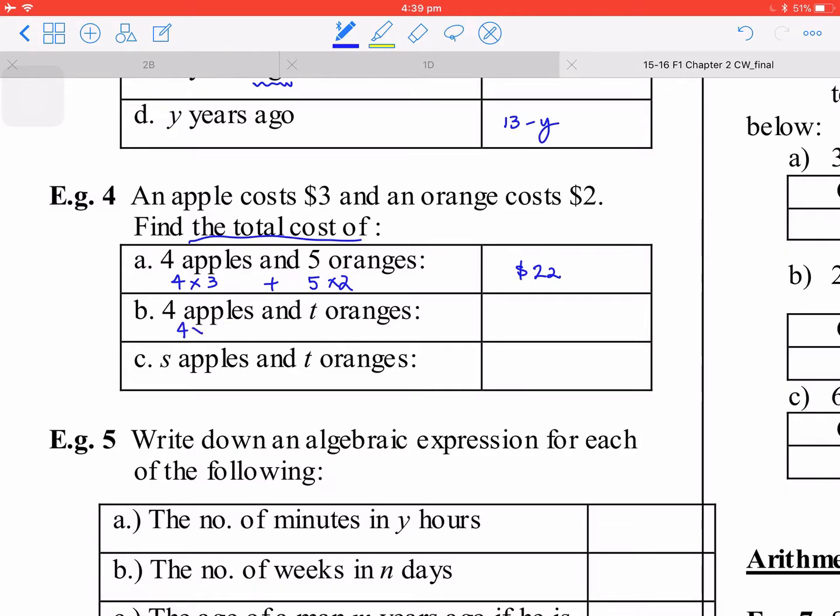If you have 4 apples, for each apple that's 4 times 3. This time you have t oranges, so you have t times 2, so 12 plus 2t. For the last one, that is about 3s and 2t, so basically you have 3s plus 2t.